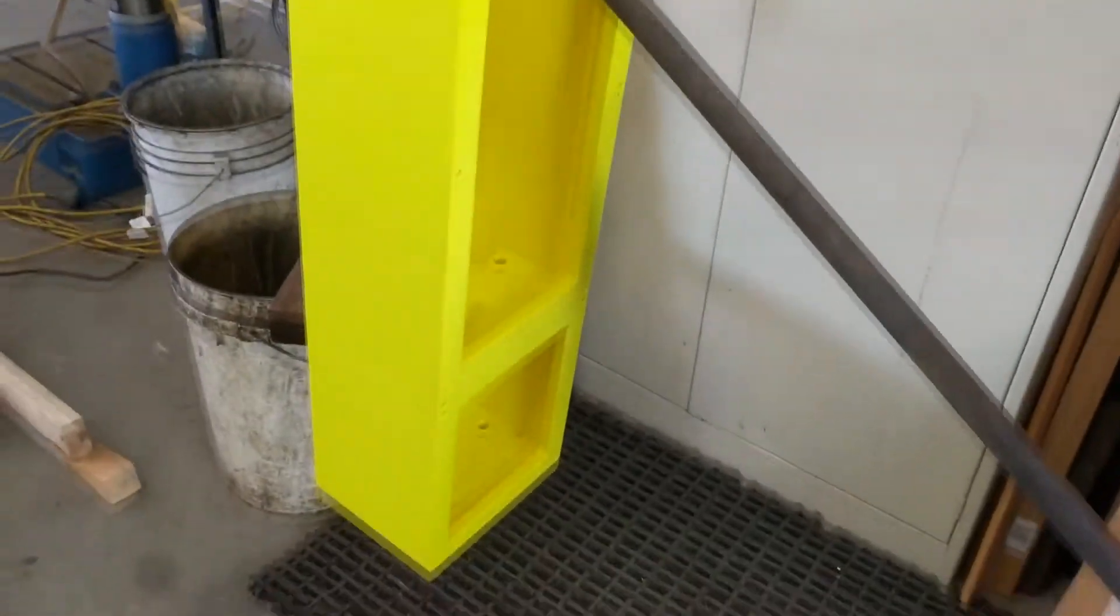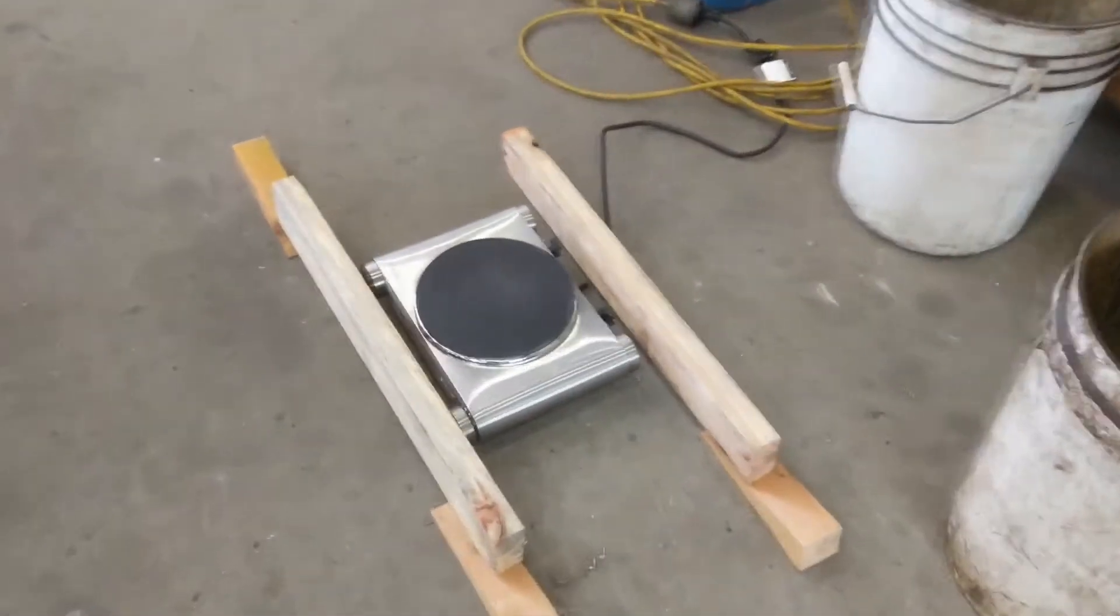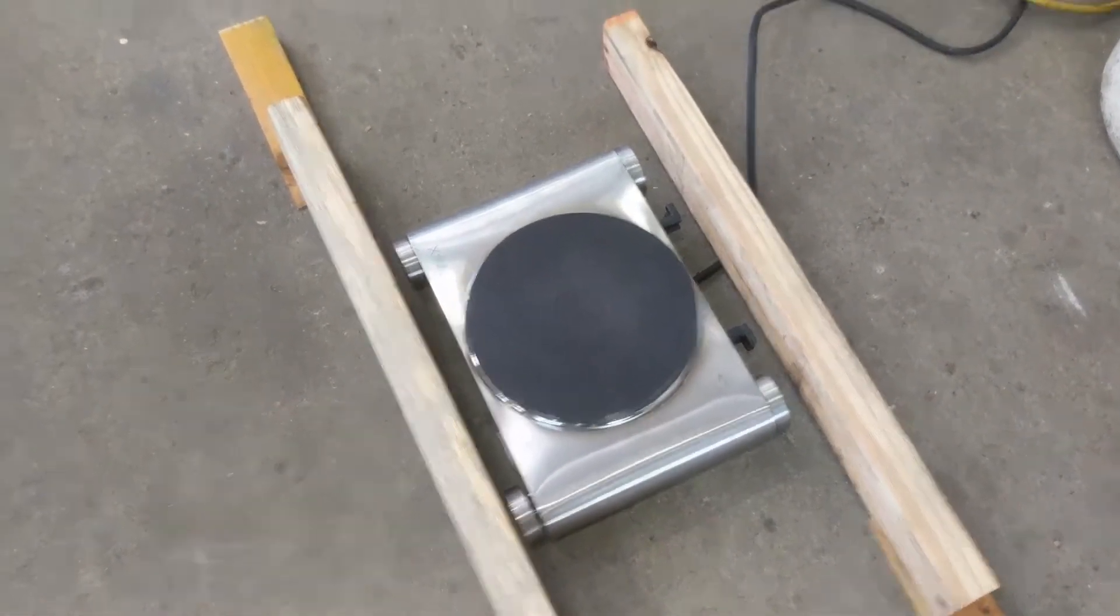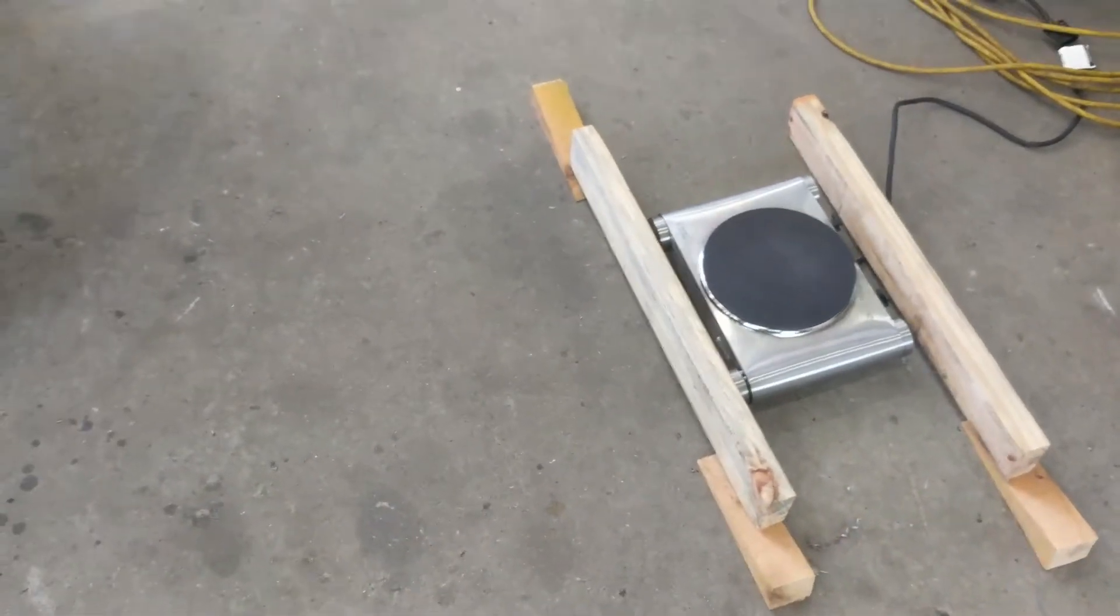So the rubbish tin idea definitely worked. That's just a little hot plate that we used underneath the rubbish tin. Normally we use a large beaker but obviously that wasn't anywhere near big enough for this job.